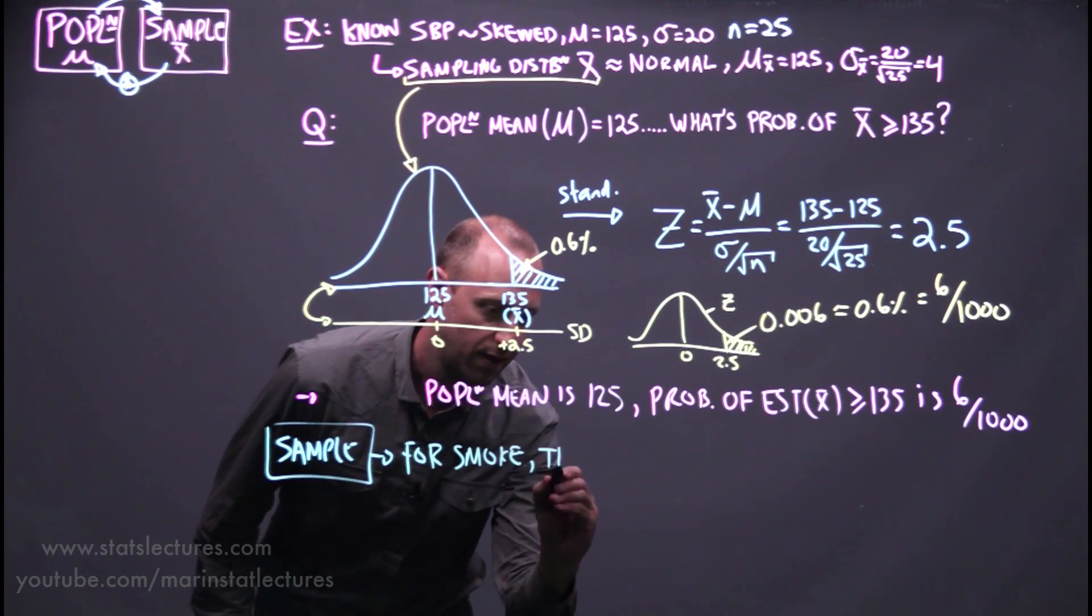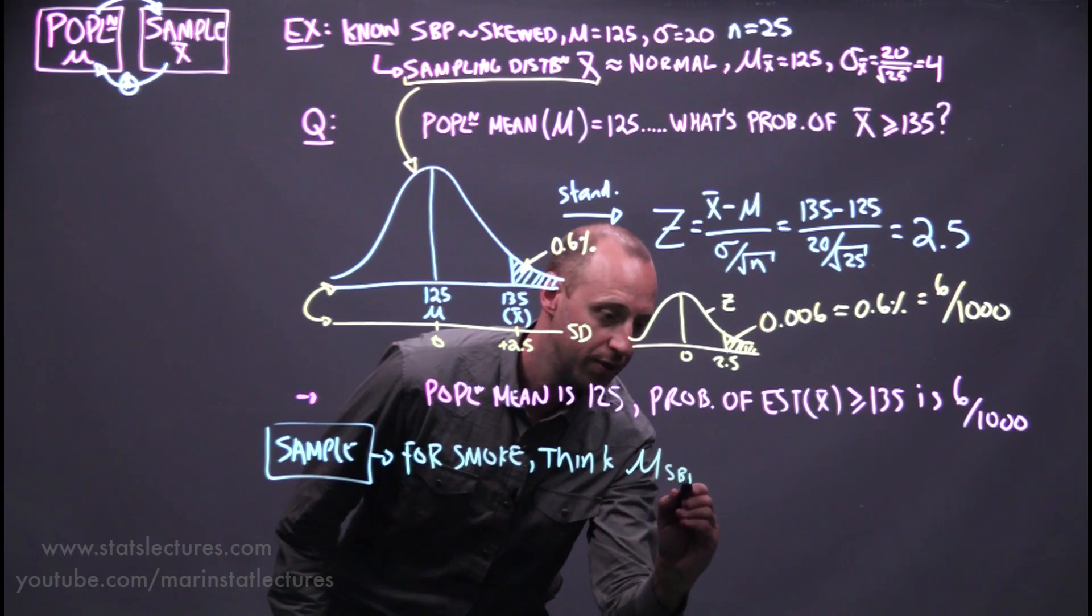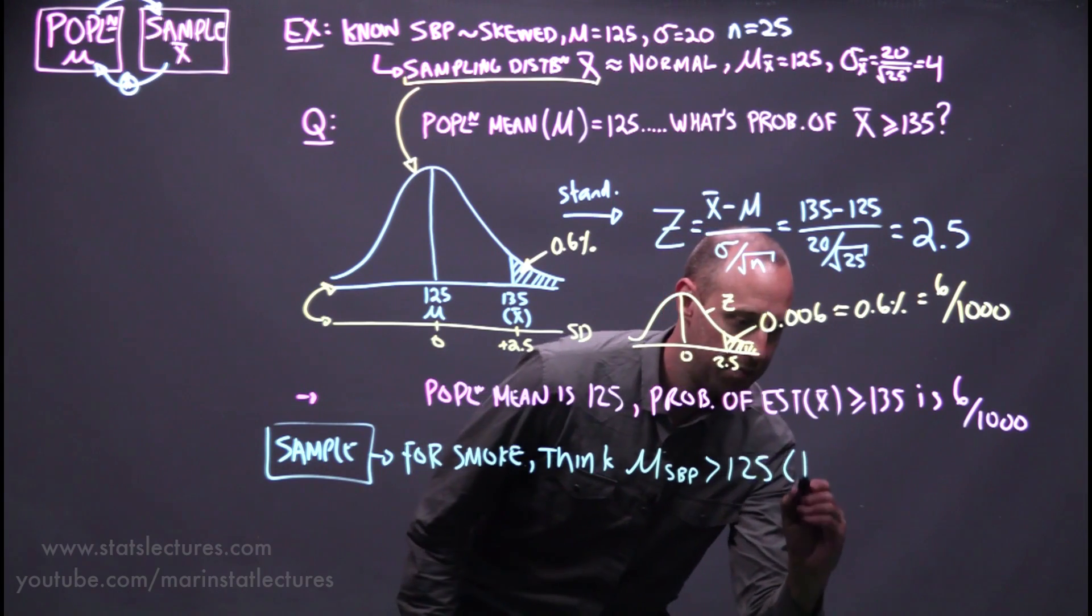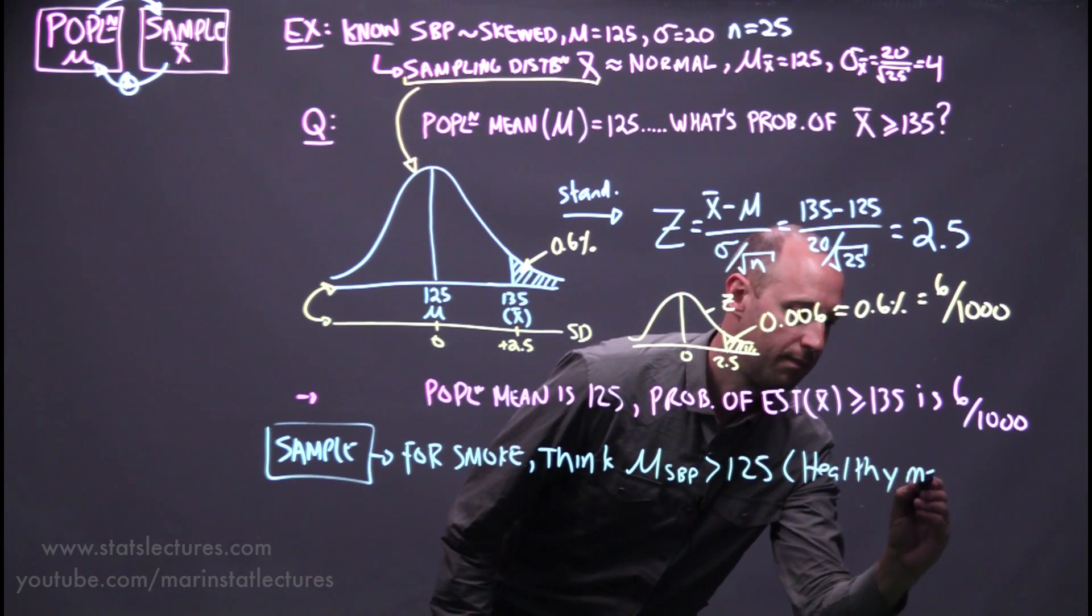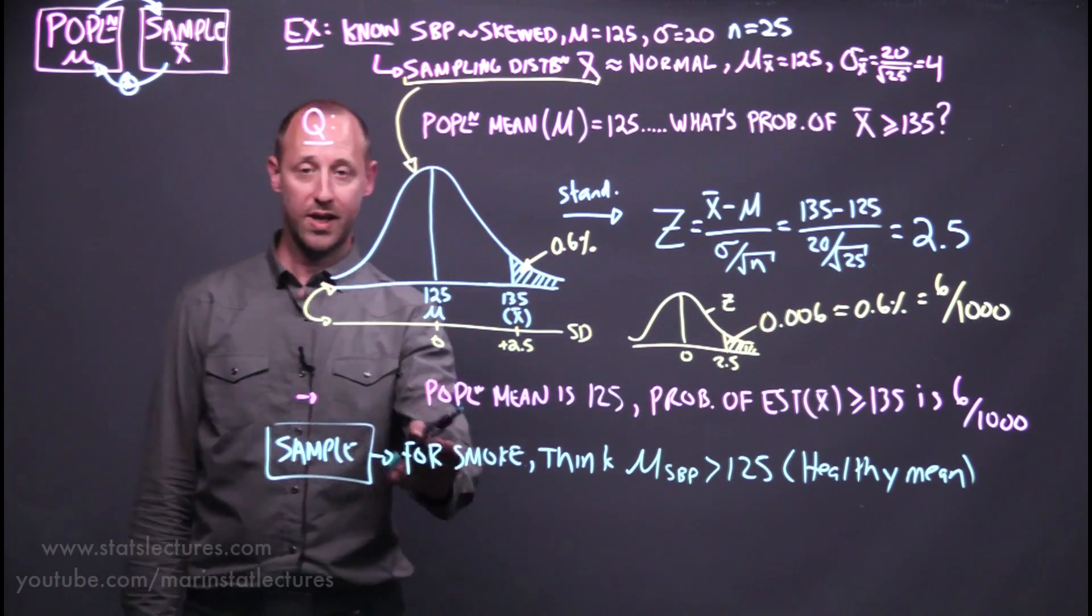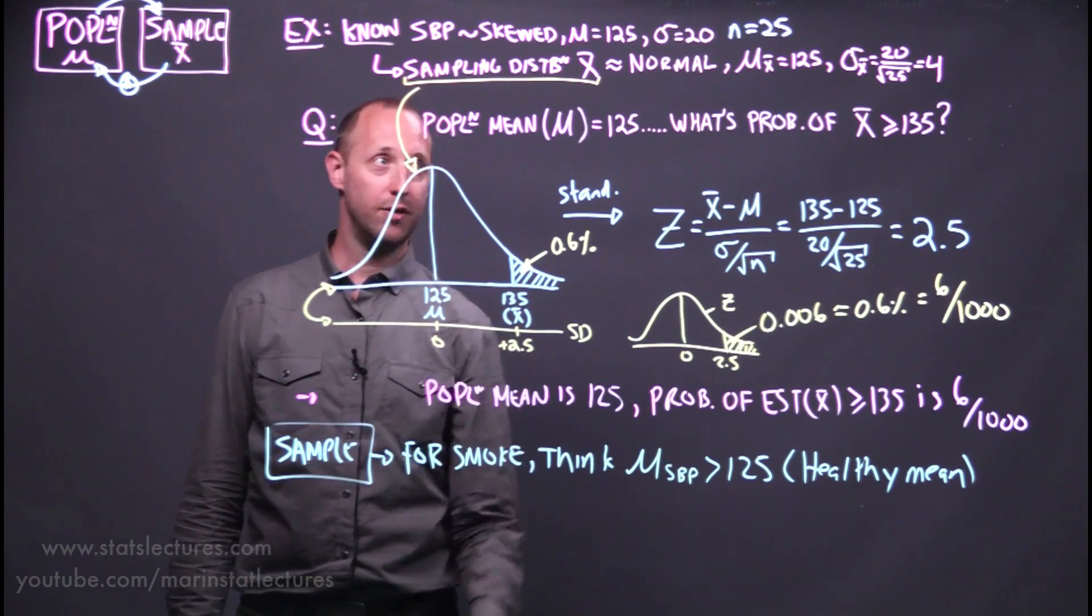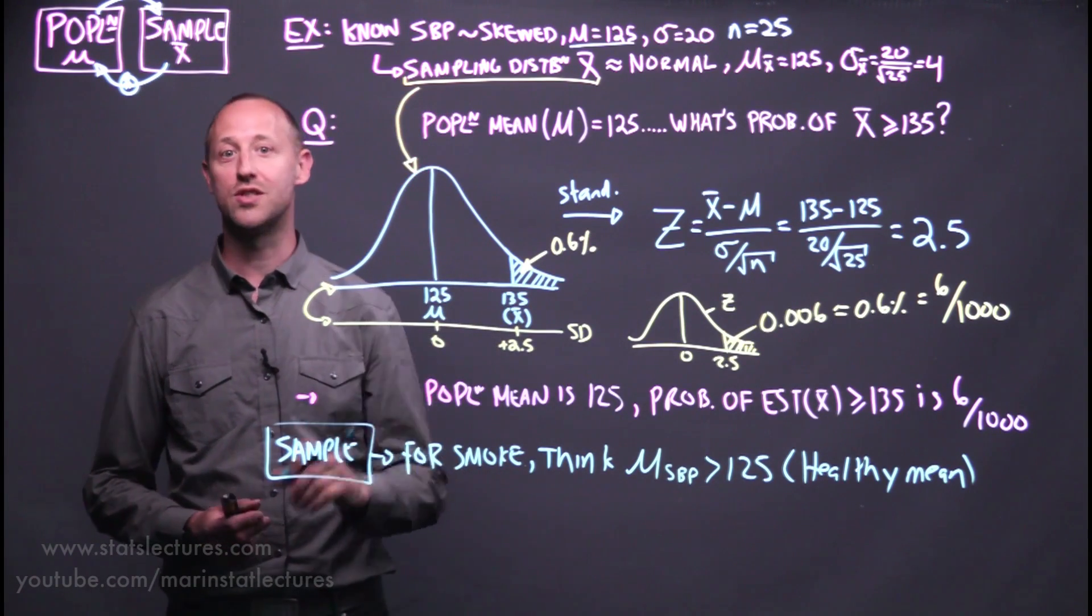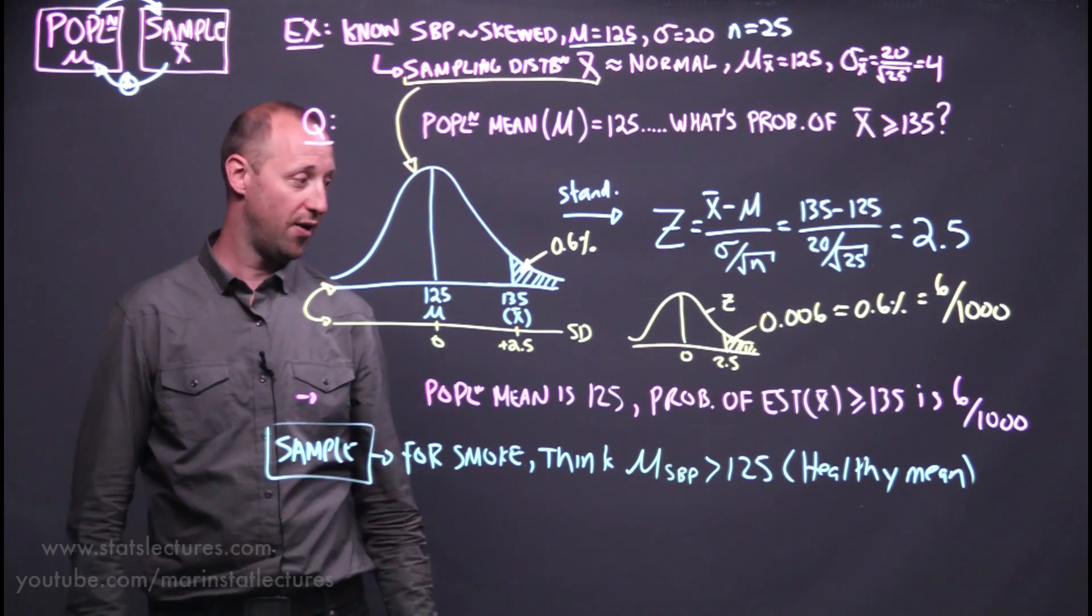For individuals who smoke, we think that their mean systolic blood pressure is going to be greater than 125, that healthy mean. Or in other words, we're looking at a population of smokers. We believe that their mean systolic blood pressure should be larger than the mean of 125, which we're supposing is known as the mean systolic blood pressure for a healthy population.